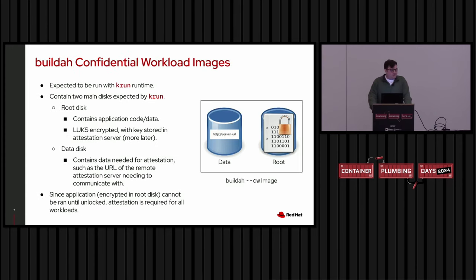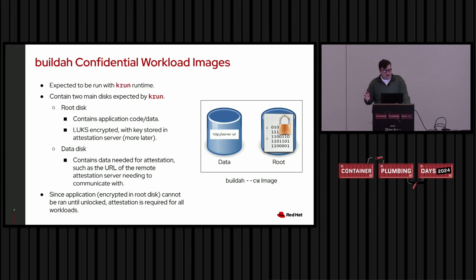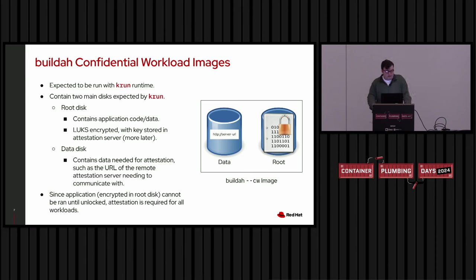What is a confidential workload image? Currently it's expected to run with the KRUN runtime. There are two main components: a root disk containing your application code and data, which is LUKS-encrypted with a key stored on a remote attestation server; and a data disk containing data needed for attestation, such as the URL of the remote server. Since the application is encrypted and you need to unlock the root disk, attestation is required — it's how we force attestation.